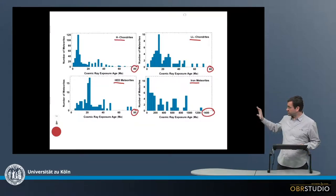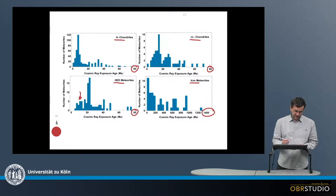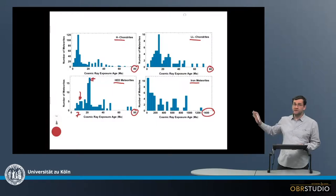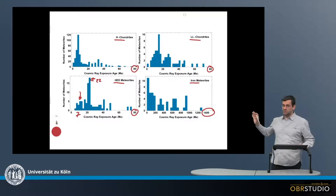And secondly, when we look at, for example, the HED meteorites, it appears there might be sort of two peaks. Maybe one here at something like 7 million years or something like that, and the second one here a little more than 20 million years, maybe 21, 22 million years or something like this.